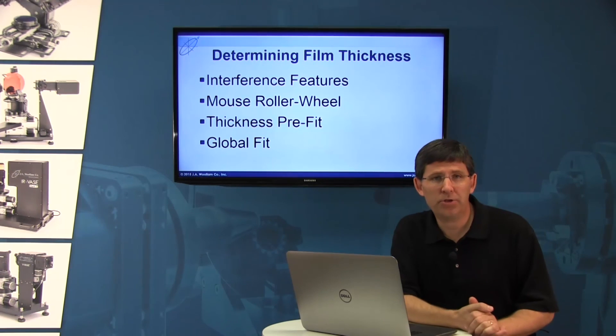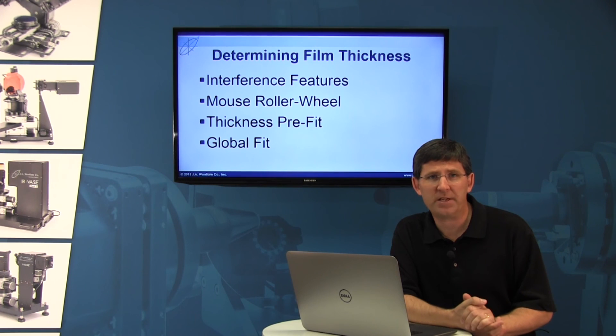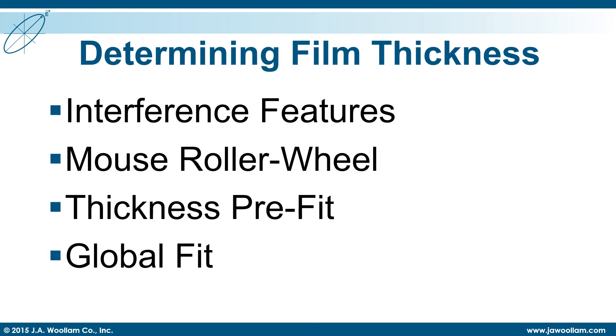So in conclusion, we've talked about interference features which you're going to see, basically peaks and valleys in your data anytime the film is transparent. We've talked about the mouse roller wheel function, the thickness pre-fit, and the global fit.